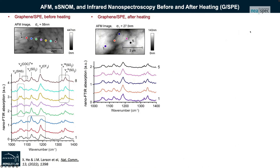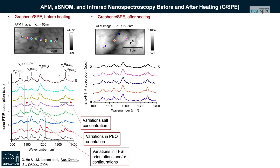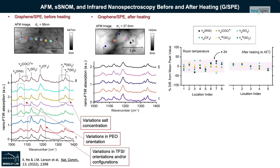In the left column you see nano FTIR absorption data of the pristine interface, and in the center column, spatially dependent nano FTIR data after heating, color coded to match where they are collected. What we found is that the intrinsic solid polymer electrolyte interface has variations in salt concentration, in PEO orientation, and TFSI orientation and configurations — all on a spatial scale of about 100 nanometer separations. After heating, while these heterogeneities decrease, they don't vanish altogether; they still persist to some extent, visible in the width of this error bar band shown in pink.